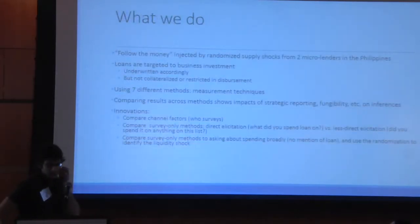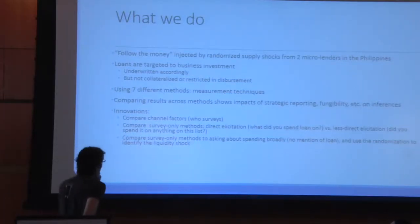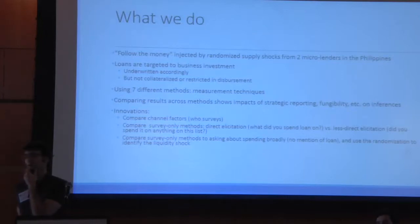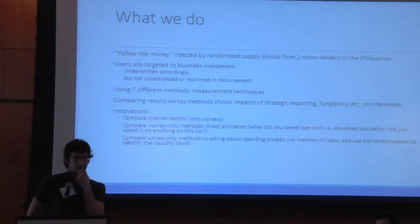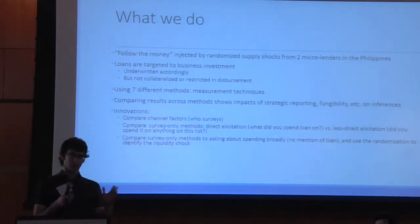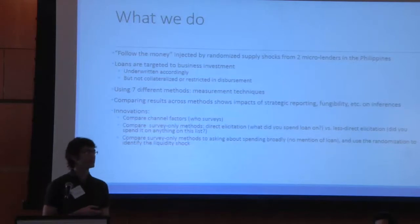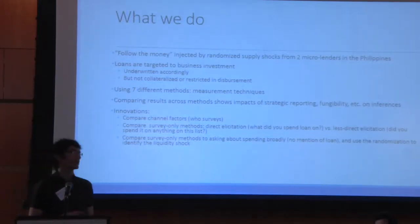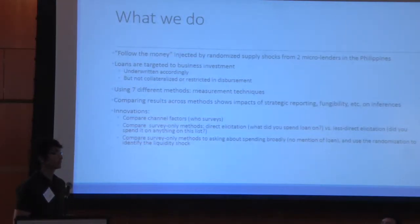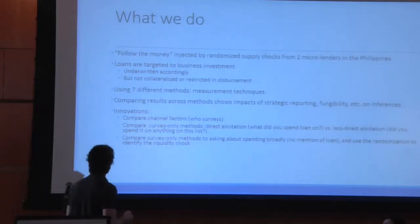So what we actually do here is work with two microlenders — two banks in the Philippines — to engineer randomized supply shocks in microlending. These loans are targeted to micro-entrepreneurs and underwritten for business investment, but their disbursement and usage, as is typical in these markets, is not actually restricted in any way. You can think of these as nominally targeted for small business use and underwritten based on cash flow analysis of the businesses, but at the end of the day money's fungible and borrowers are free to deploy the loan proceeds however they wish.